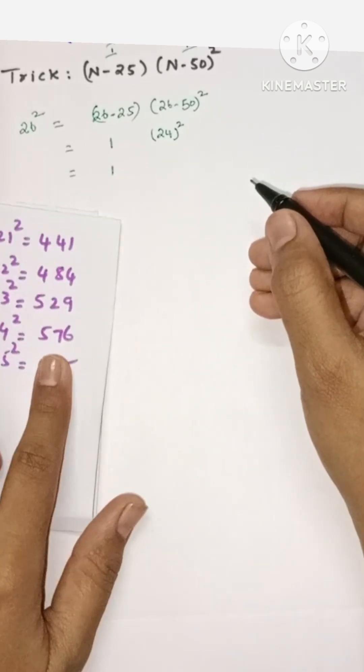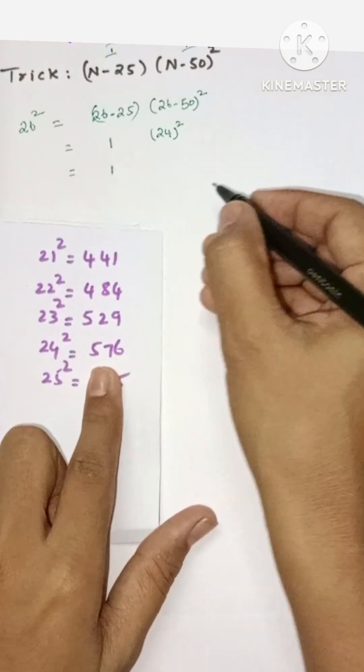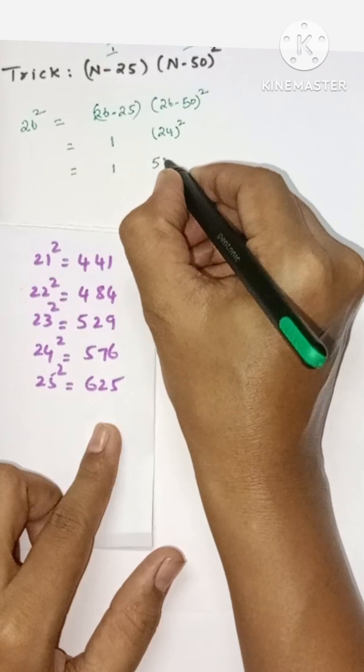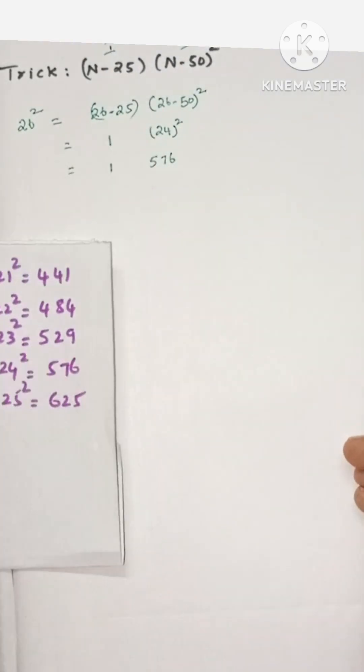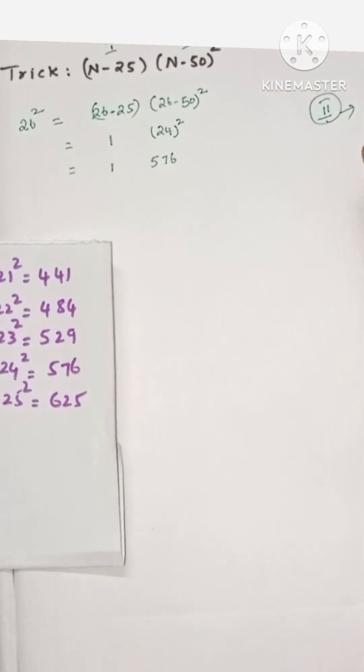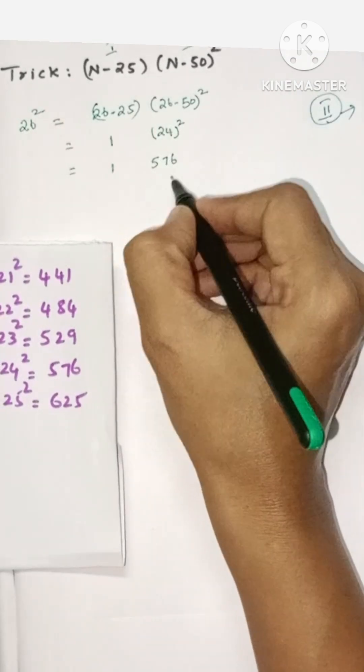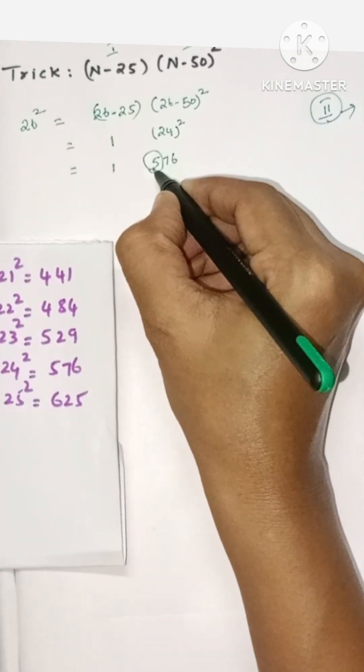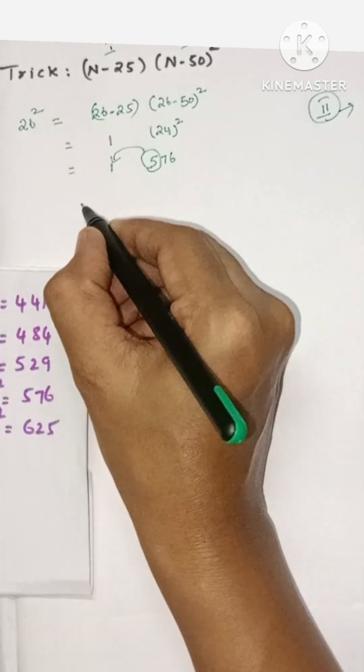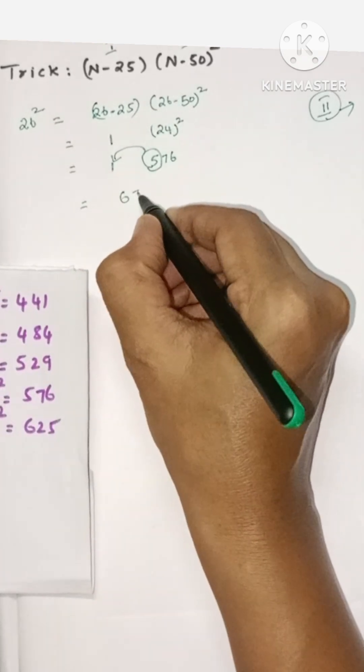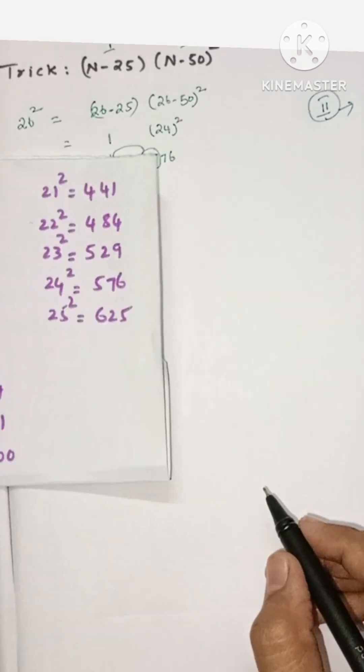Here we have 1 and 24 square is 576. In the second part we must have only two digits, but here we have three, so just add this 5 to the first part: 1 plus 5 is 6. So it is 676.